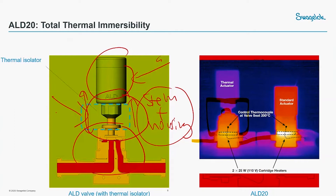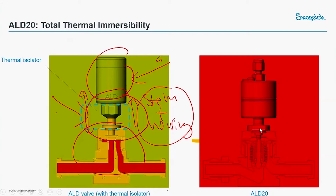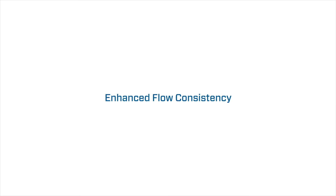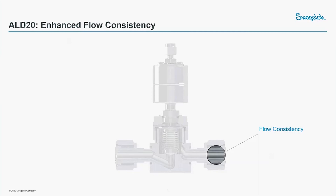Now let's look at the LD20 IR diagram. If you can see here, everything is in red, meaning all the parts and components within the LD20 are in the same temperature range. In other words, you can put the whole LD20 into the gas box itself, as compared to the current approach where you need to separate the actuator outside the gas box so as not to influence the heat into the actuator. This is what we call total thermal immersibility.